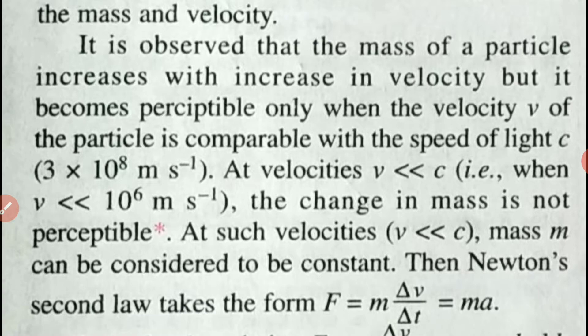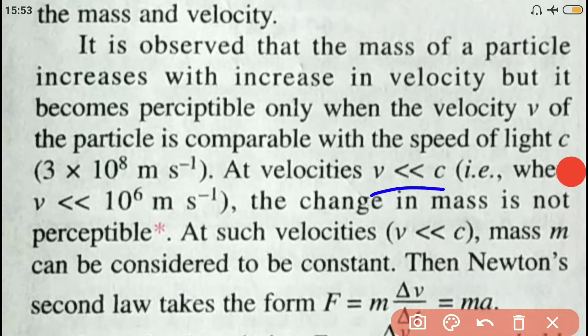If the body is moving with a speed very close to the speed of light, at that scenario the momentum changes because of the change in mass also. When velocity is very, very less — of the order of 10⁶ meters per second — the change in mass is not observable and can be ignored. At such velocities, mass can be considered constant, and Newton's second law of motion takes the form F equals ma, since dV/dt gives acceleration.